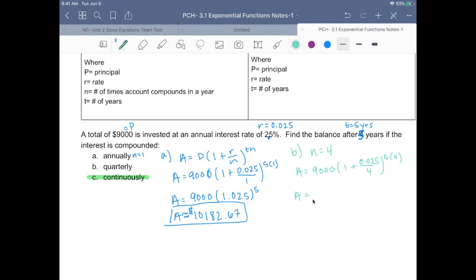So I have 0.025 divided by 4. This is 9,000 times 1.00625, do not round, raised to the 20th power. When I calculate this, I get the amount equals $10,194.37, a little bit more money.